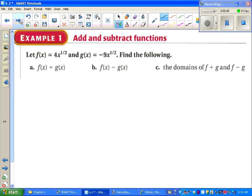Let's take a look at part a, f of x plus g of x. Which is 4x to the 1 half minus 9x to the 1 half. Because the variables are the same, we can just subtract negative 5x to the 1 half. It's useful to remember that means negative 5 times the square root of x.